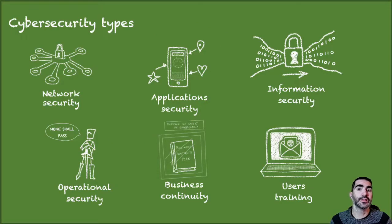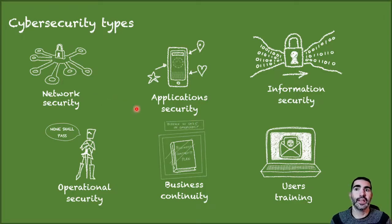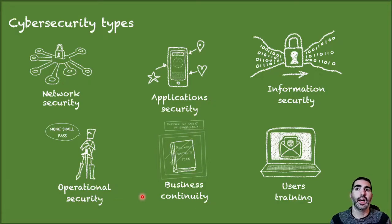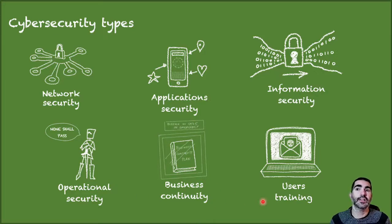Which kinds of cybersecurity do we have? We have network security, that is protecting from intruders. Application security, that keeps software and devices free from threats. Information security, that protects the integrity and privacy of the data. Operational security, that determines which users are able to access which data. Disaster recovery and business continuity defines how an organization responds to a cybersecurity threat. And finally, user training focuses on providing tools and knowledge to the users, since we are the weakest link in the chain.